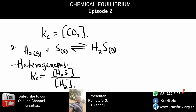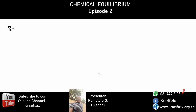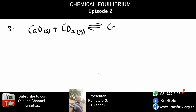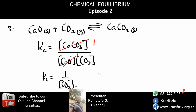One more example that could be tricky: CaO(s) + CO₂(g) ⇌ CaCO₃(s). Since both CaO and CaCO₃ are solids, they are written as one. Therefore, Kc = 1 over [CO₂].